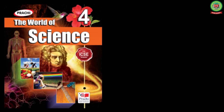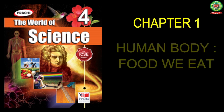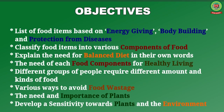Hello students, welcome to the science class of 4th standard. Today I am going to teach you a new chapter — Human Body: Food We Eat. The objectives of this chapter are: list of food items based on energy giving, body building, and protection from diseases; classify food items into various components of food; explain the need for balanced diet.